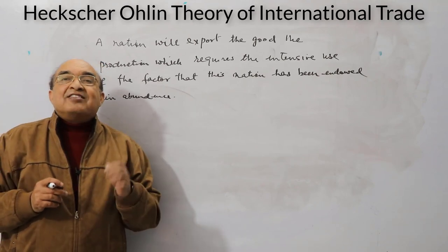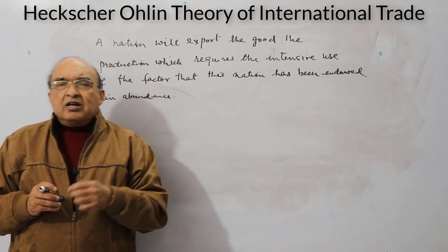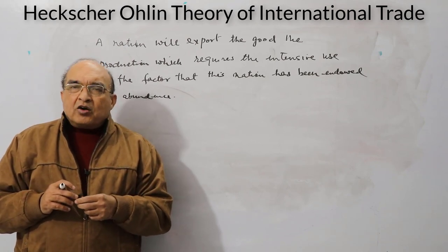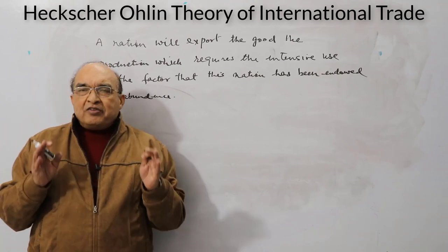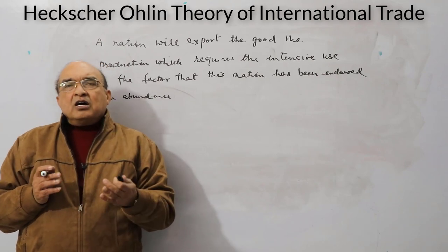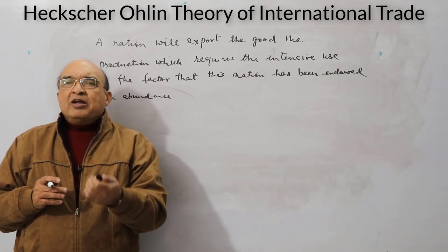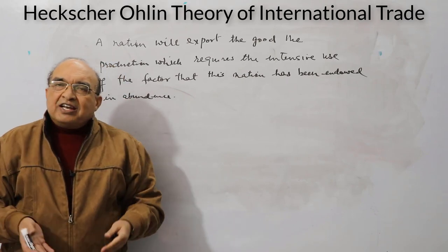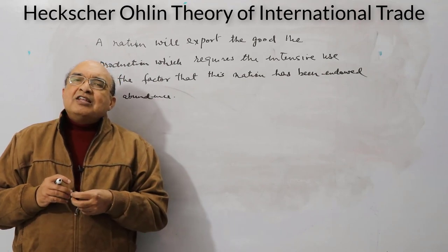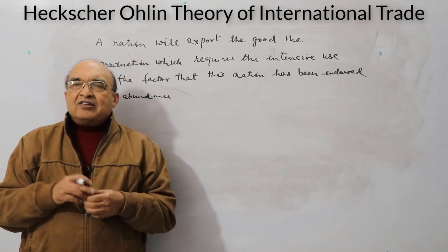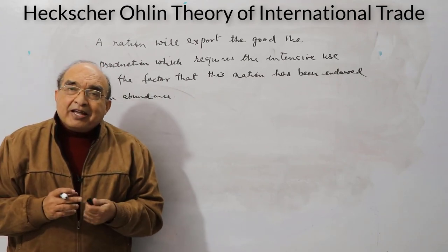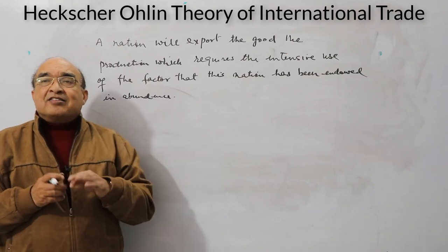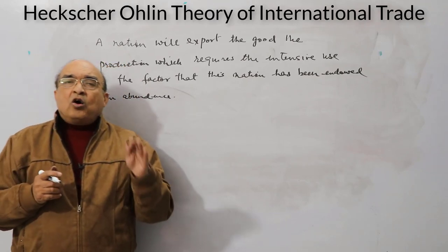Two things need to be distinguished: abundance and intensity. A good is said to be labor-intensive if it uses more labor than capital to produce a unit of output compared to the other good. For example, if one good is produced with a certain ratio of labor to capital, and this ratio is greater than that used in another good, then that good is labor-intensive.